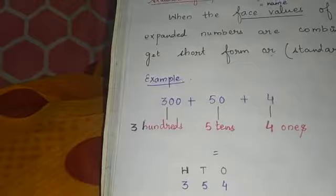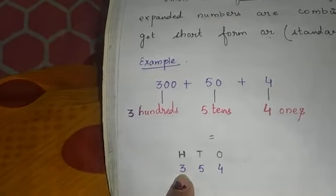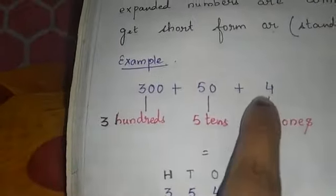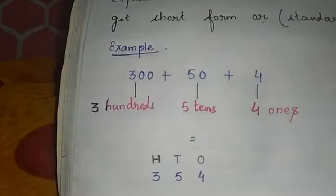Now see, 3 goes to hundreds group or hundreds column. 5 goes to tens column, and 4 goes to ones column. Okay student? Now see, similarly, you have to solve this number.